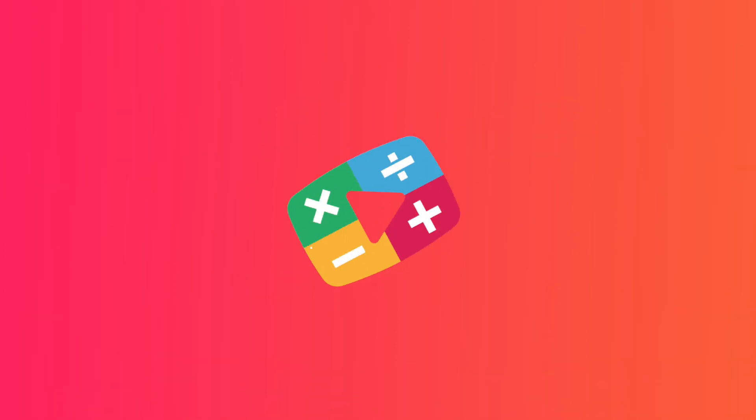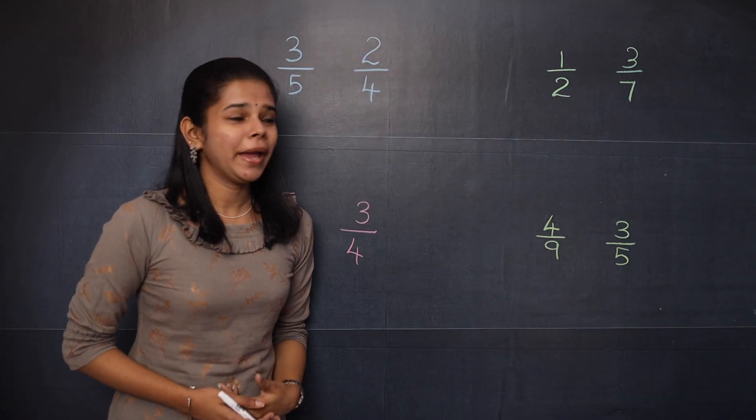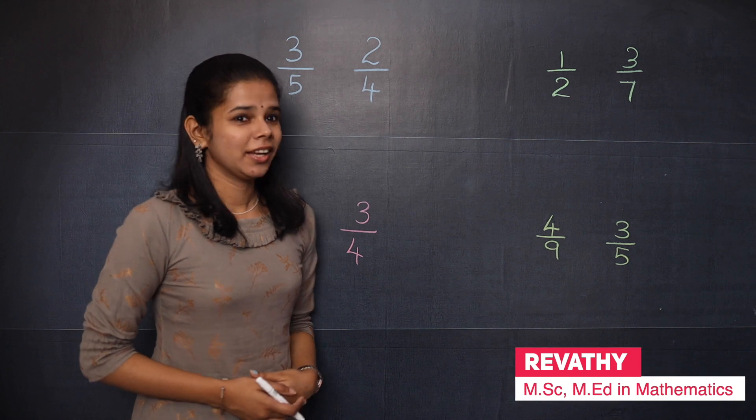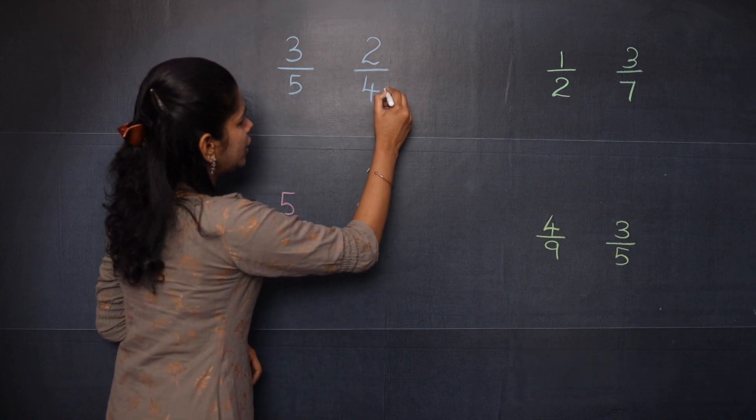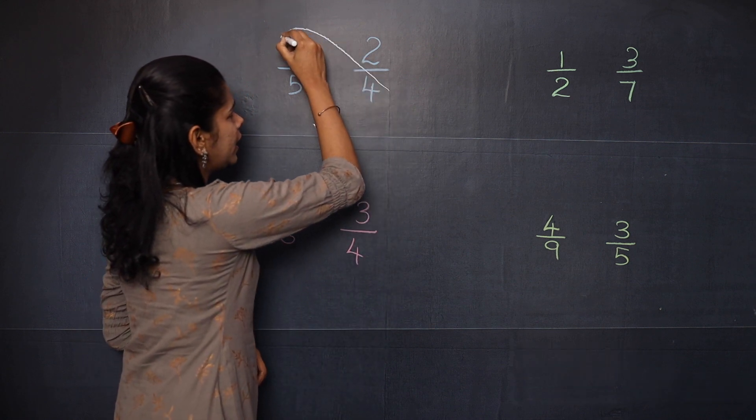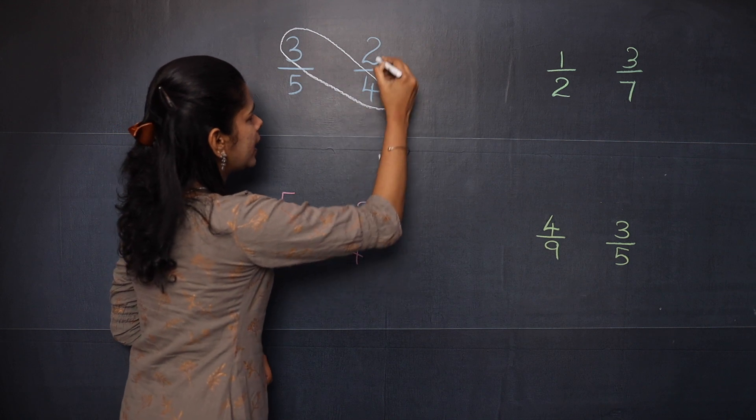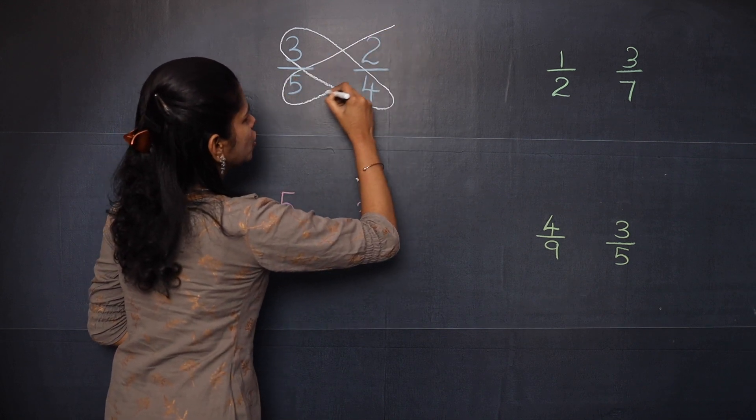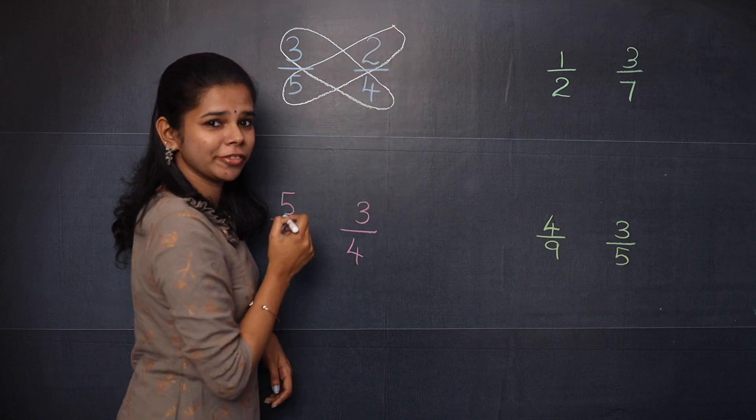Hi friends, welcome back to Math Simplified. Now let's compare these fractions. The butterfly method is that you will multiply these two numbers and these two. So it looks like a butterfly, right?